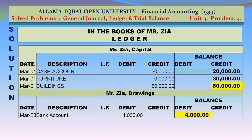Mr. Jia capital account: credit — cash account March 1 Rs 20,000; furniture March 1 Rs 10,000; buildings March 1 Rs 50,000. Total: Rs 80,000 credit. Mr. Jia drawings account: debit — bank account March 28 Rs 4,000. Closing balance: Rs 4,000 debit.